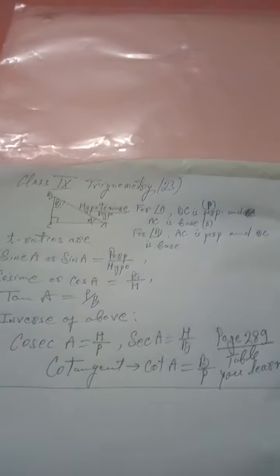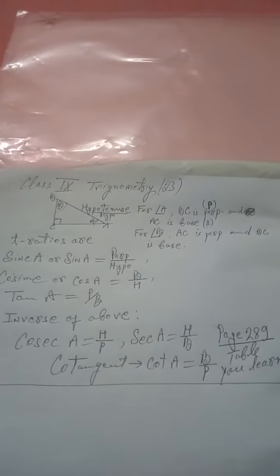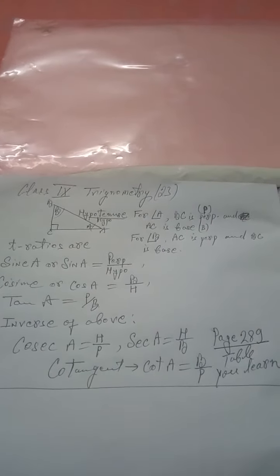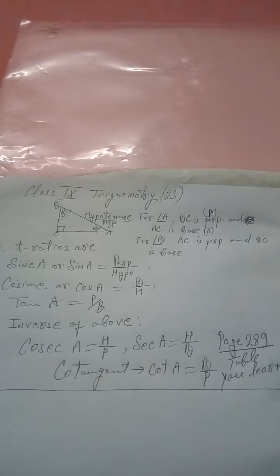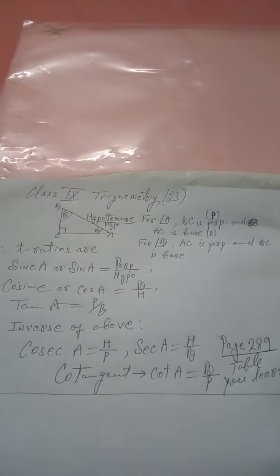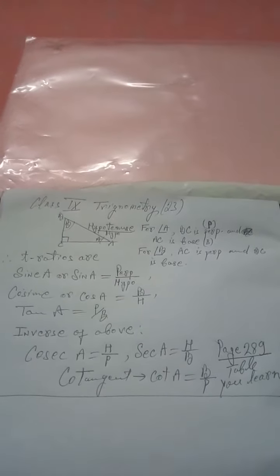This is for class 9, Trigonometry chapter 23. Here you have to learn how to find the sides or angles of a right angle triangle that is in the syllabus.